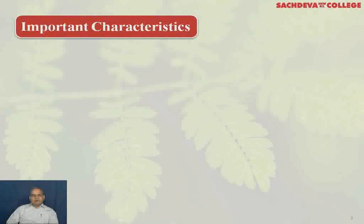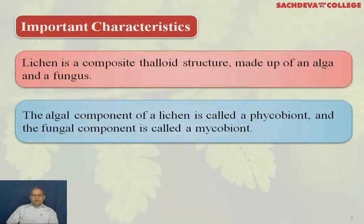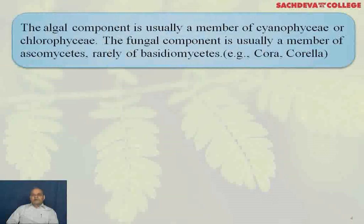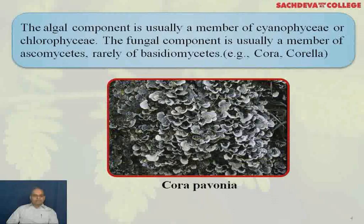Important characteristics: Lichen is a composite thaloid structure made up of an alga and fungi. The algal component is called the phycobiont and the fungal component is called the mycobiont. The algal component is usually a member of Cyanophyceae (blue-green algae) or Chlorophyceae (green algae). The fungal component is usually a member of Ascomycetes, and rarely Basidiomycetes. Basidiolichens are not found in India; examples include Cora and Corella. This is Cora pavonia, a basidiolichen.